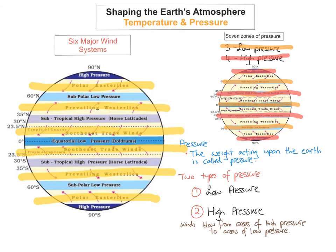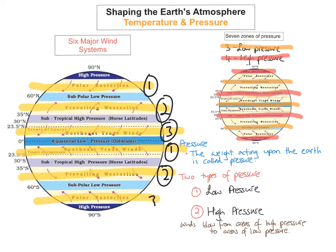In each of these six wind systems, the winds blow from areas of high pressure to areas of low pressure. There are three systems in the northern hemisphere and three in the southern hemisphere, each moving from high pressure to low pressure.